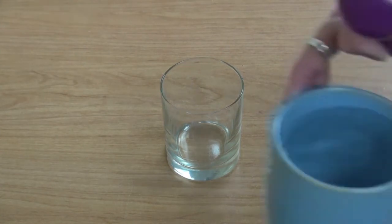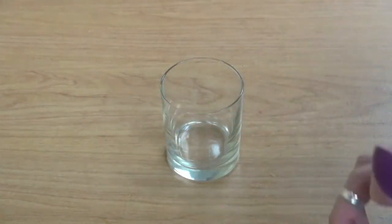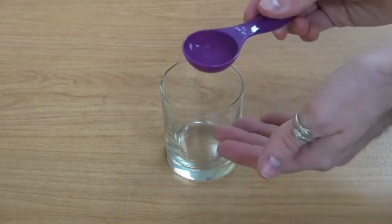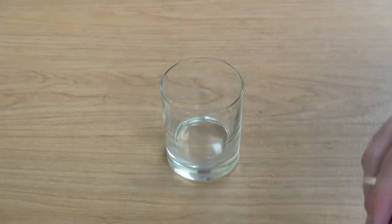First we're going to make our yeast mixture so we're going to use warm water. You're going to want to make sure that this is warm not hot water and we're going to take two tablespoons of this and put it into a glass.